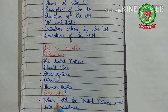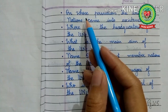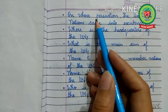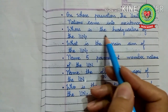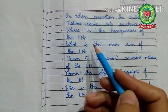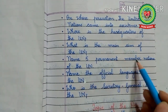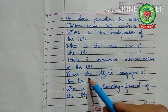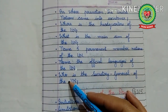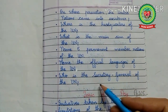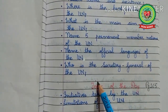Now answer these cross questions: When did the United Nations come into existence? On whose persuasion did the United Nations come into existence? Where is the headquarters of the UN? What is the main aim of the UN? Name five permanent member nations of the UN. Name the official languages of the UN. Who is the Secretary General of the UN?